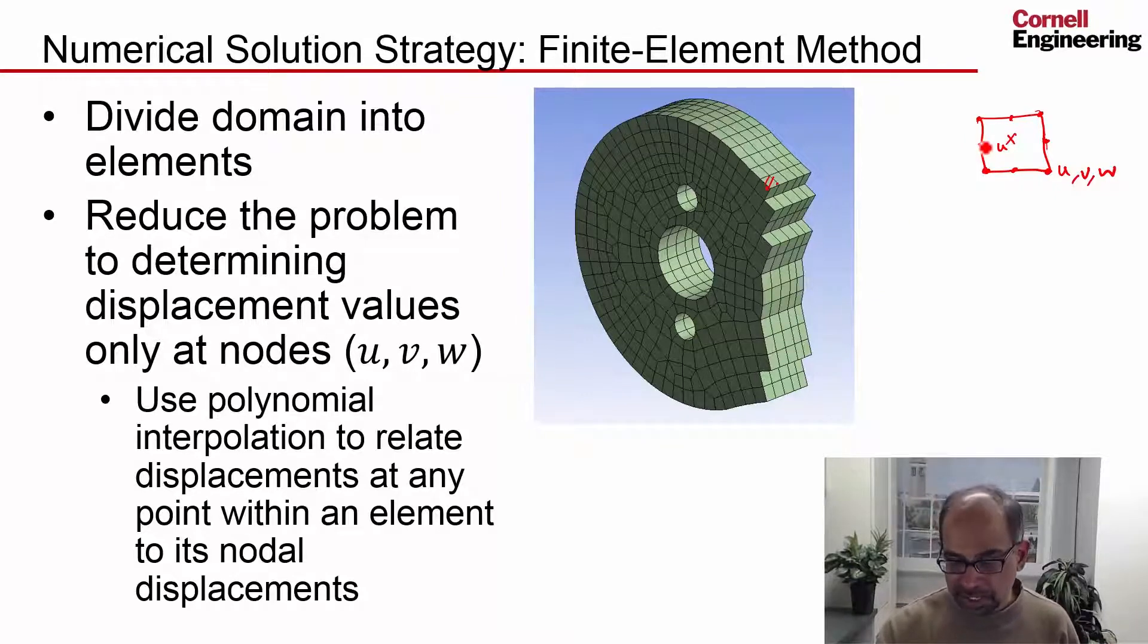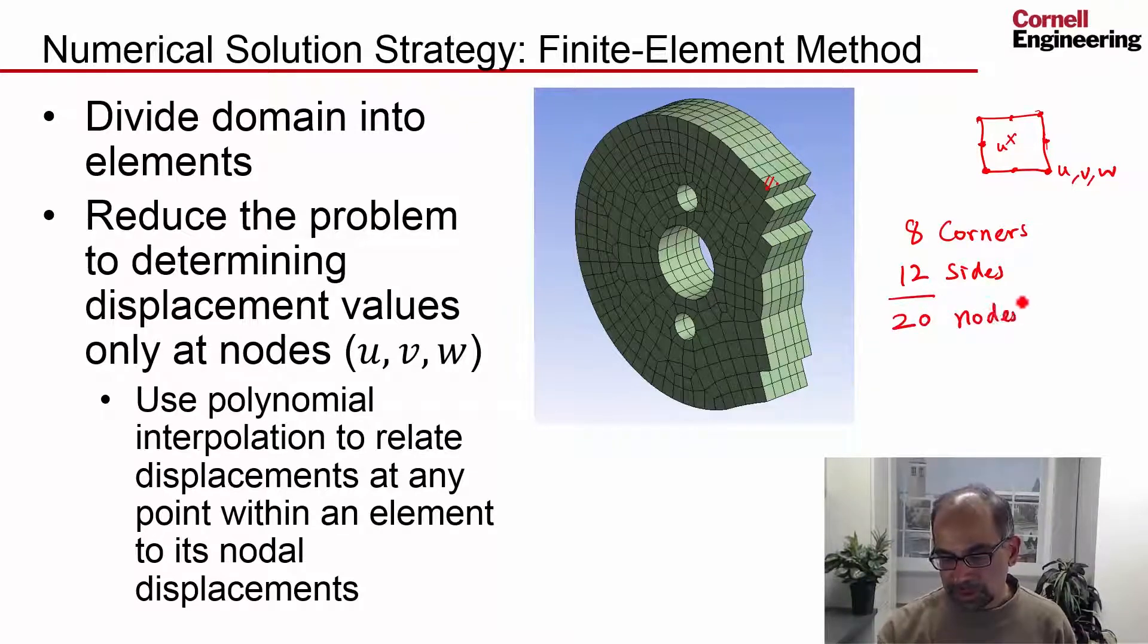A box has eight corners and it has 12 sides. And the midpoint of each of those sides is a node, so you have 20 nodes per element.